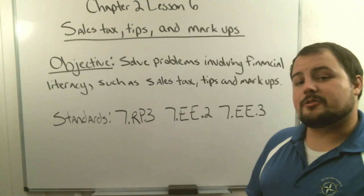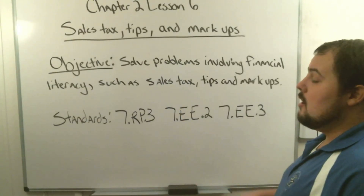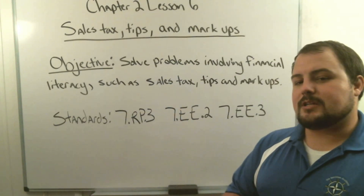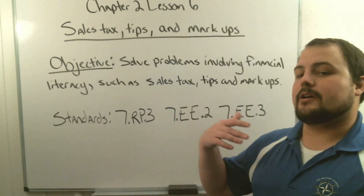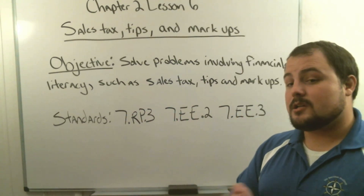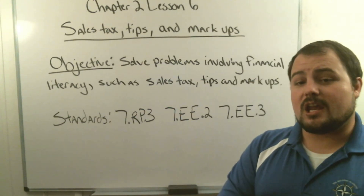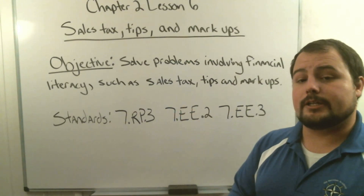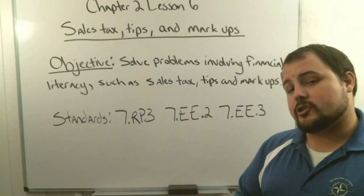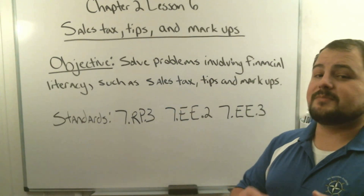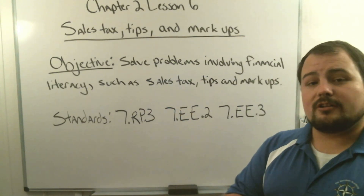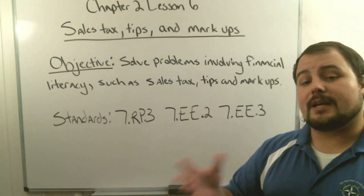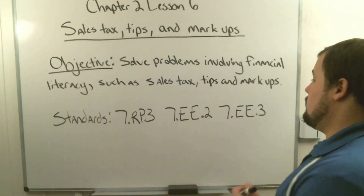Hey seventh graders, welcome to chapter 2 lesson 6. In this video we're going to be talking about sales tax, tips, and markups — increasing the price of something based on a tax, a tip (like when you're tipping a waiter or waitress at a restaurant), and markups. Our objective today is to solve problems that involve financial literacy, things you can actually use later on in life.